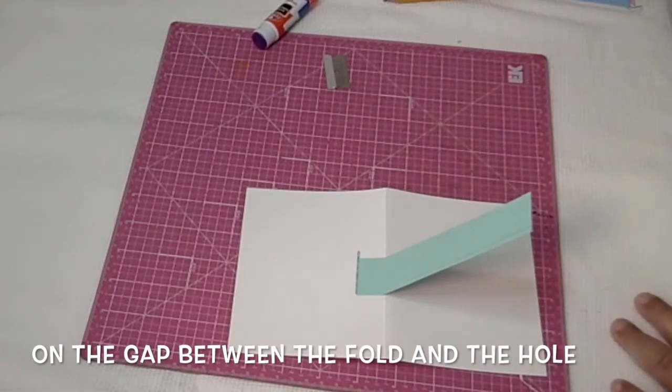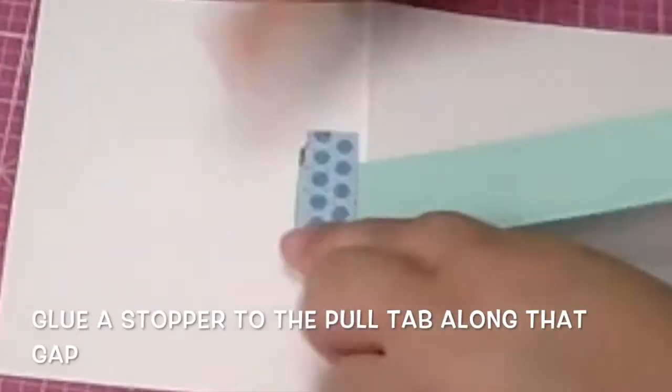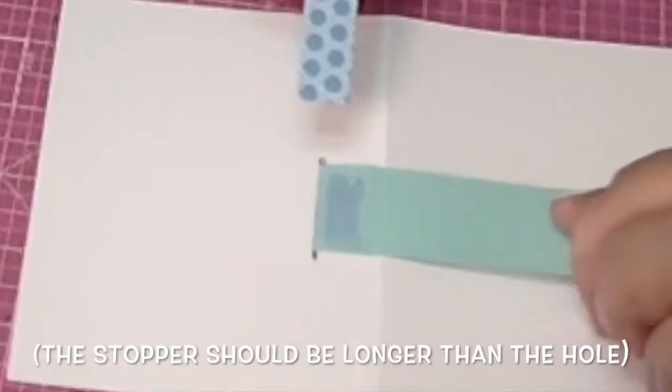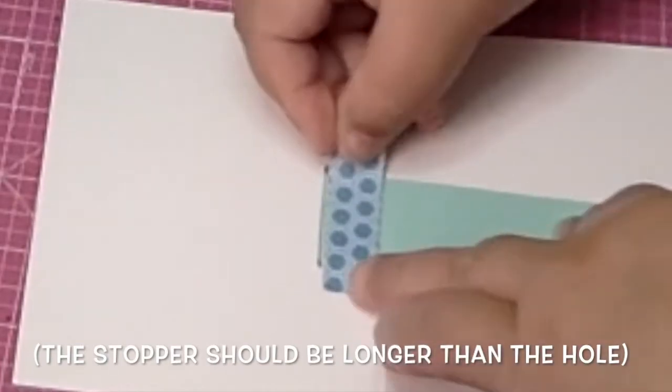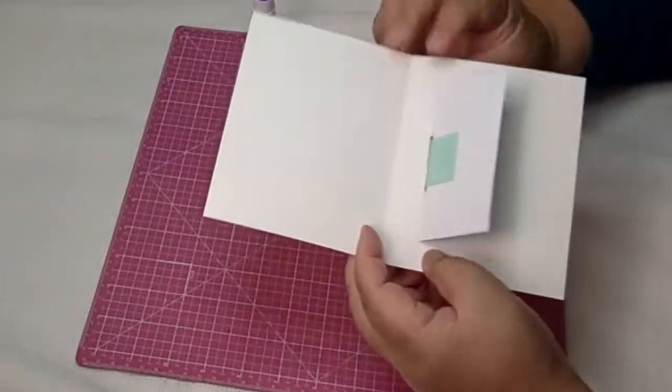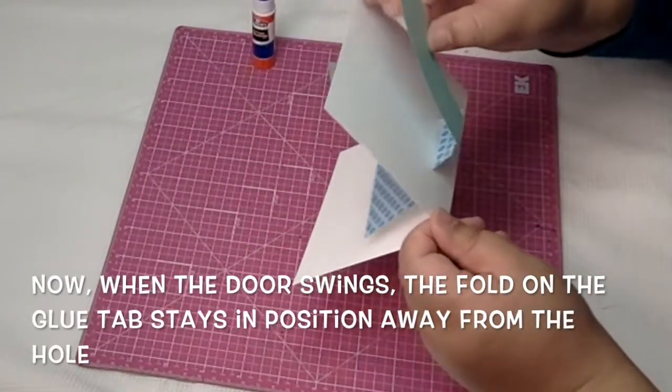You have to place a stopper in that gap, which is a piece of paper that's longer than the hole and just as wide as the gap is from the hole to the fold line. That way the pull tab won't slip through the hole anymore - it's gonna stay right where it is.